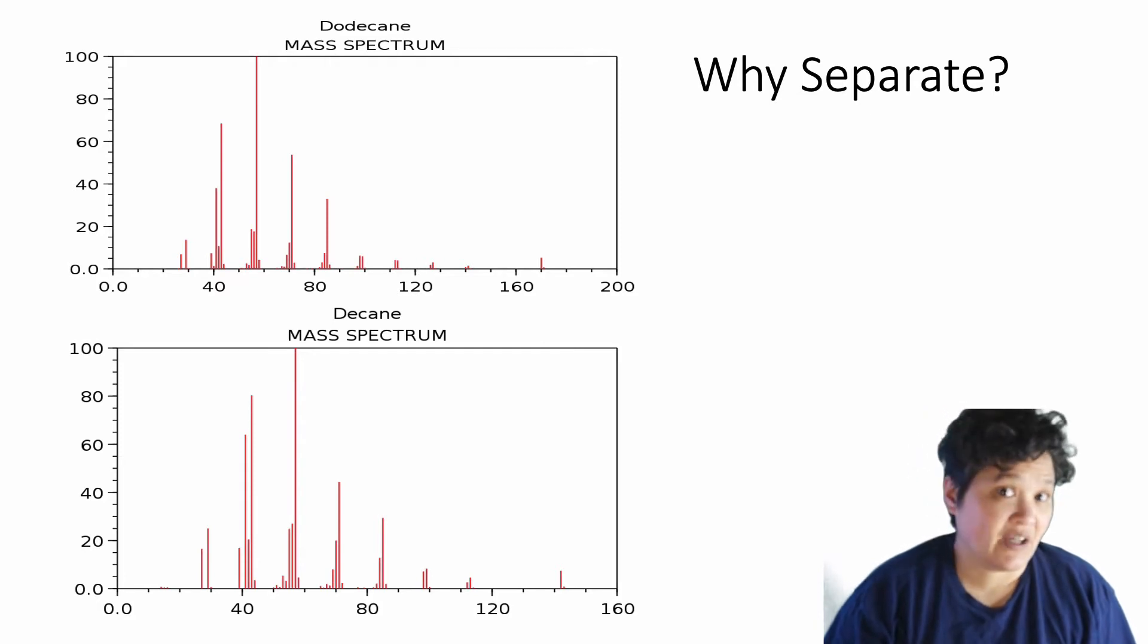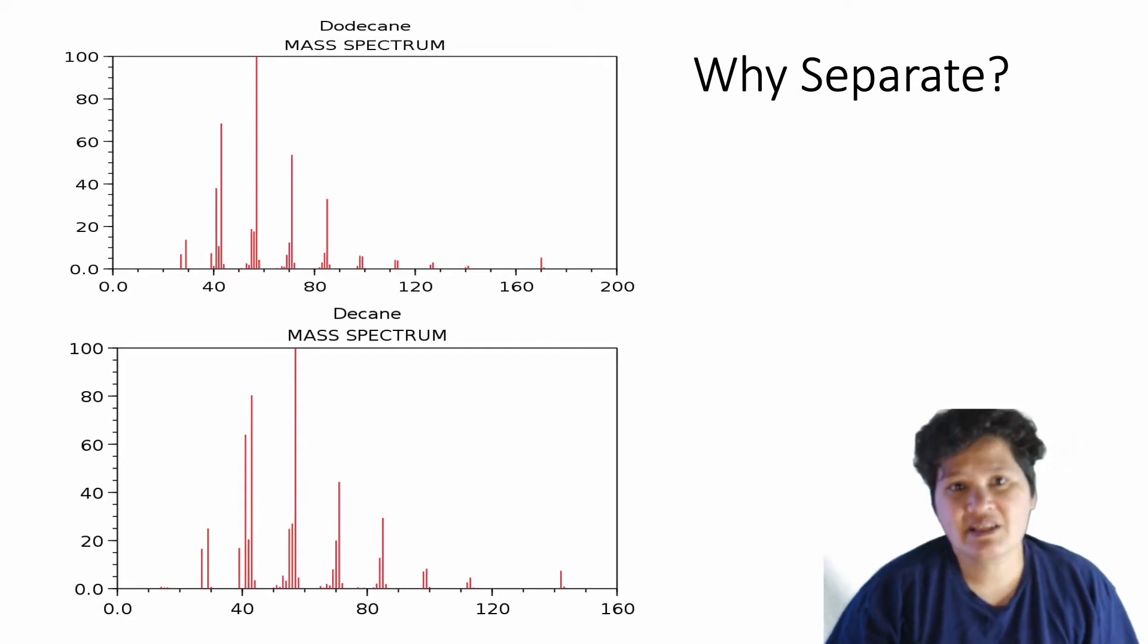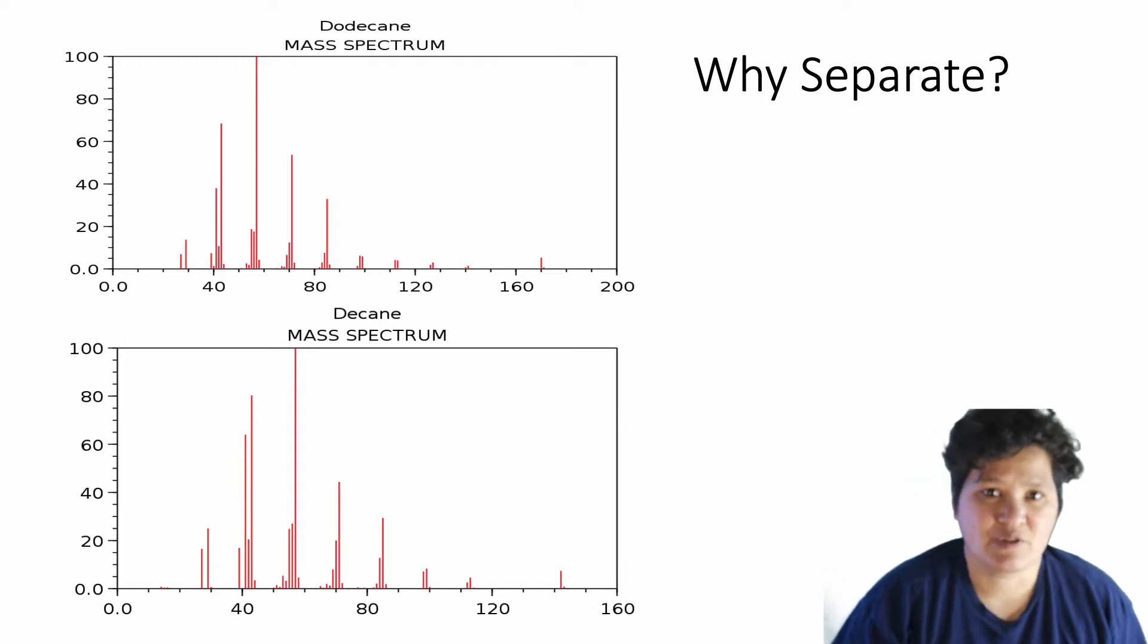One is for decane and the other for dodecane, and you can see that they have many of the same peaks in common. So how would you know if you just had dodecane, or a mixture of dodecane and decane? But if you could separate the decane from the dodecane somehow, you would be able to collect those spectra at different times.